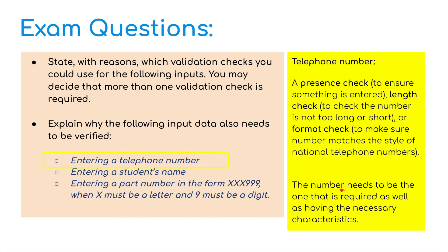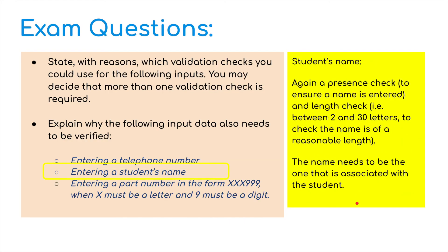For the student's name: again, we'd use a presence check to ensure the name has been entered, and a length check — for example, between two and thirty letters — to ensure the name is a reasonable length. The name also needs to be associated with that particular student, which is why verification is also needed.